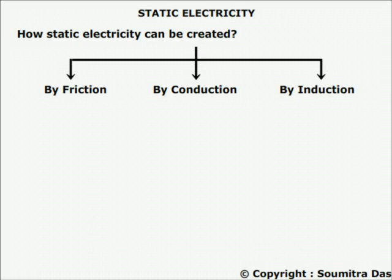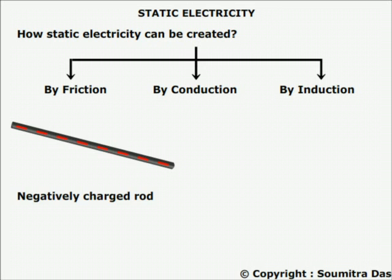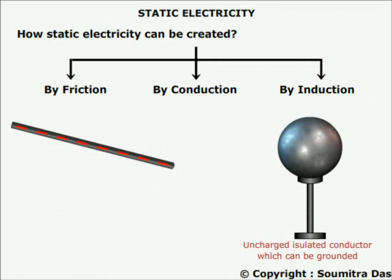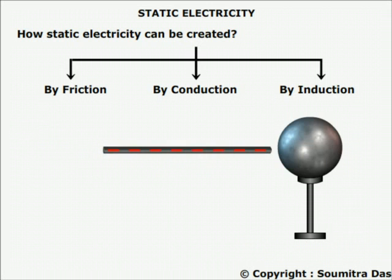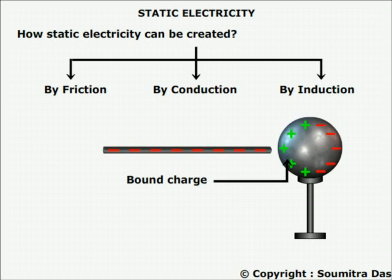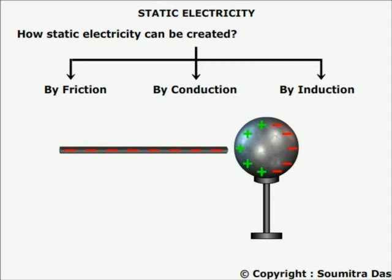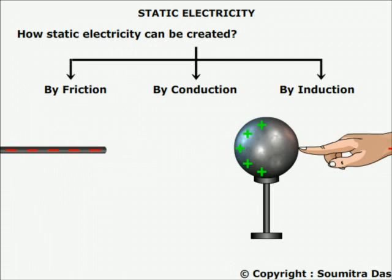No. 3: By induction. Here the requirement is one charged object and an uncharged insulated conductor which can be grounded. When a charged object with negative charge is brought very near to the uncharged object but not touching it, the electrons get repelled to the far end and the near end becomes positively charged. The charge at the near end is called the bound charge and the charge at the far end is called the free charge. If we remove the charged object, the bound and the free charge get attracted and the object becomes neutral again.